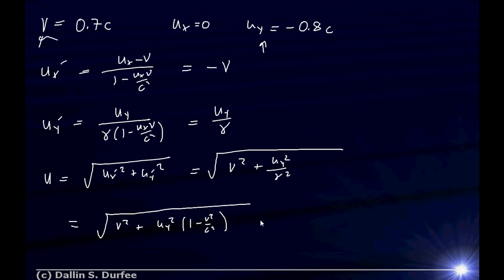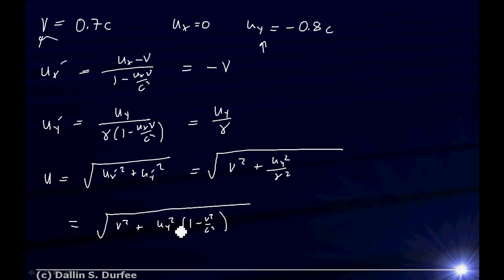If you get something bigger than the speed of light, you know you've got trouble. Check your work. If we transform into a frame moving faster, that gives us a bigger X component of velocity — that makes sense. So our total velocity should get bigger. And if the initial velocity in the Y direction is bigger, you'd expect to get a bigger magnitude of velocity in the transformed frame as well.